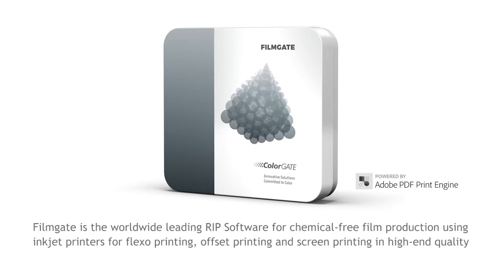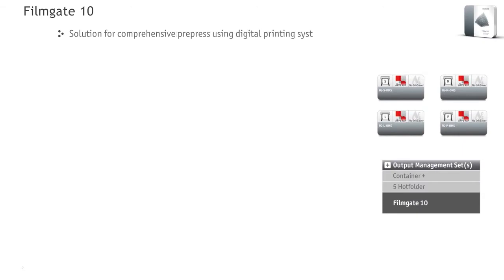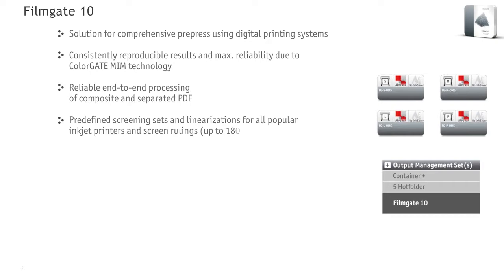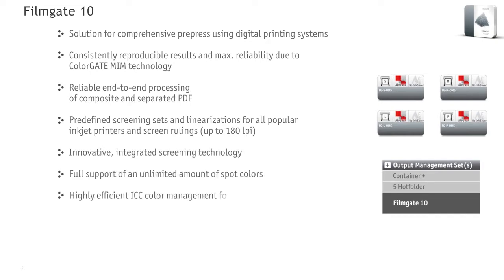FilmGate 10 is the worldwide leading RIP software for chemical-free film production using inkjet printers for flexo, offset and screen printing in high-end quality for commercial and industrial printing. FilmGate is the solution for comprehensive pre-press using digital printing systems for consistently reproducible results and maximum reliability in the production process, due to unique ColorGate MIM technology — Media Ink Meter Mode technology. For the individual requirements of users, FilmGate has four integrated innovative screening technologies.